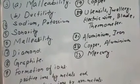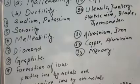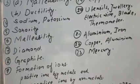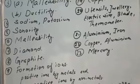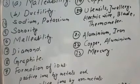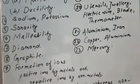Number seven: name a non-metal which is very hard - this is diamond. Number eight: name a non-metal which is a good conductor of electricity - graphite. Number nine: state one chemical property which can be used to distinguish a metal from a non-metal - formation of ions. Positive ions are formed by metals and negative ions are formed by non-metals.